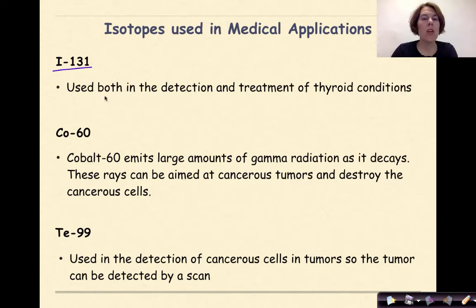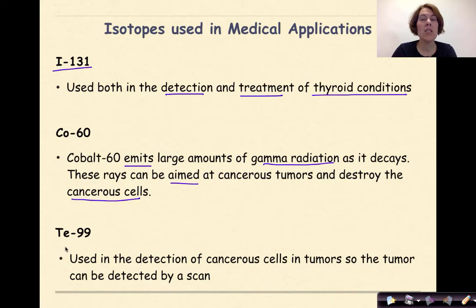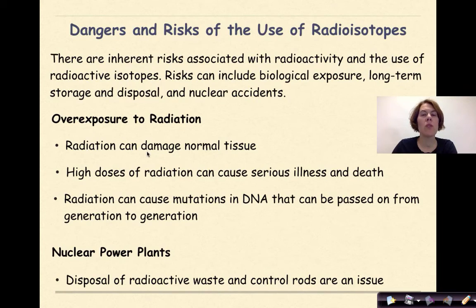Isotopes used in medical applications: iodine-131 is used both in the detection and treatment of thyroid conditions. Cobalt-60 emits large amounts of gamma radiation as it decays — these rays can be aimed at cancerous tumors to destroy cancerous cells. Technetium-99 is used in the detection of cancerous cells in tumors so that the tumor can be detected by a scan.